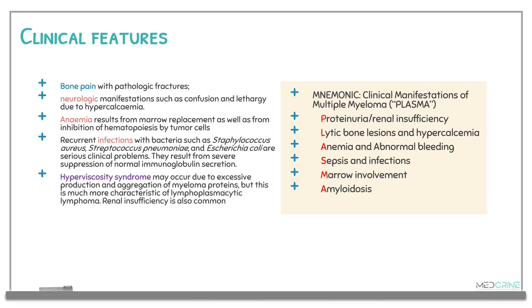Patients with multiple myeloma present with anemia, resulting from marrow replacement and inhibition of hematopoiesis by tumor cells. They are also at higher risk of developing recurrent infections, most commonly caused by Staphylococcus aureus, Streptococcus pneumoniae, and Escherichia coli, which cause serious clinical problems. These infections result from suppression of normal immunoglobulin secretion.